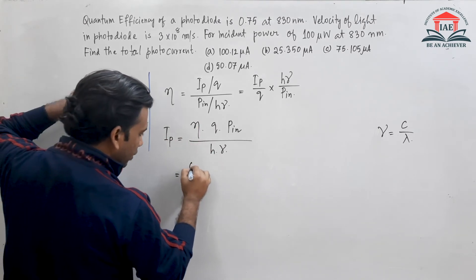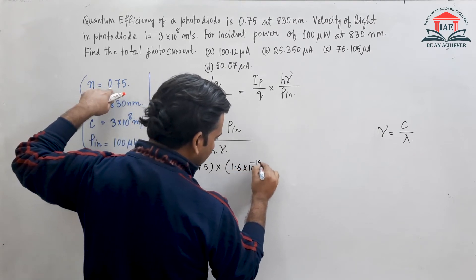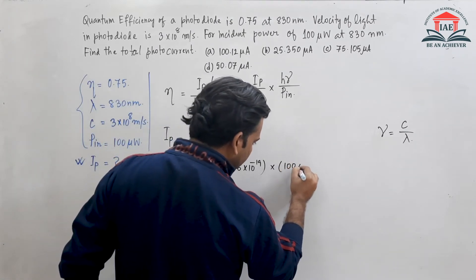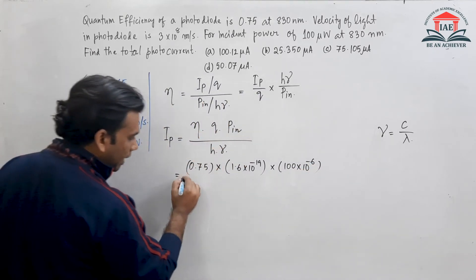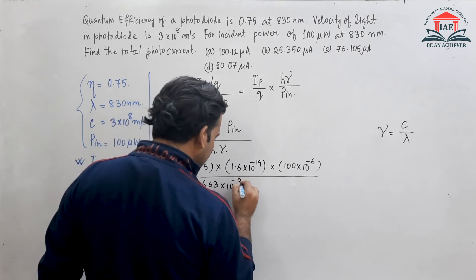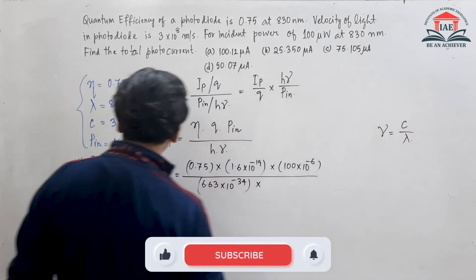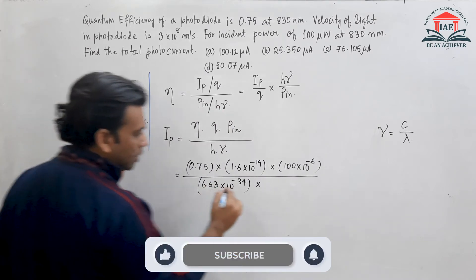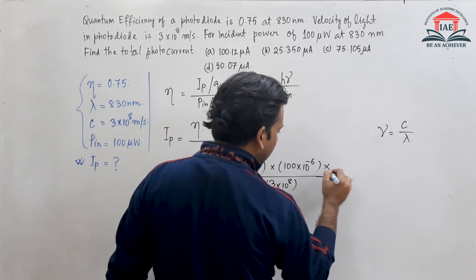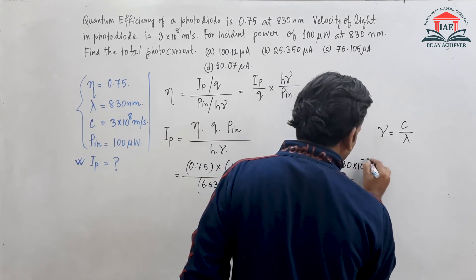Substituting the values: η = 0.75, incident power P = 100×10⁻⁶ microwatt, Planck's constant h = 6.63×10⁻³⁴, speed of light c = 3×10⁸, and lambda = 830 nanometer = 830×10⁻⁹ meters.